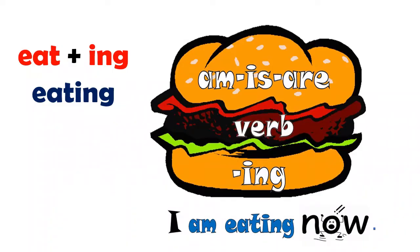Let me explain it further using helping verbs with different subjects. The first verb is eat, and the present participle form is eating. Using it with I: I am eating now. Here you can see that I have used the helping verb am and the present participle form eating.